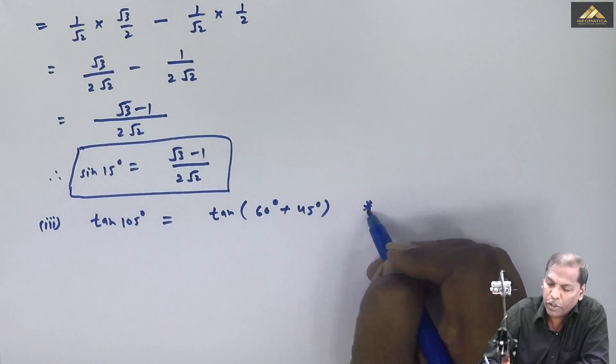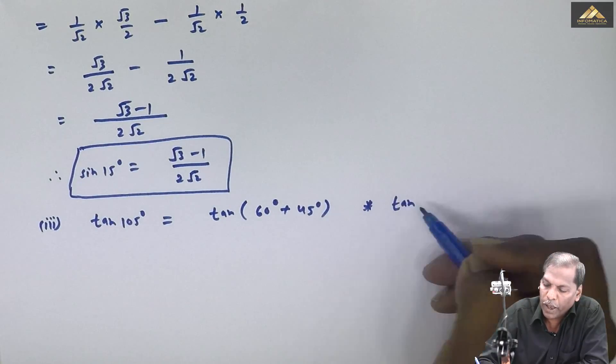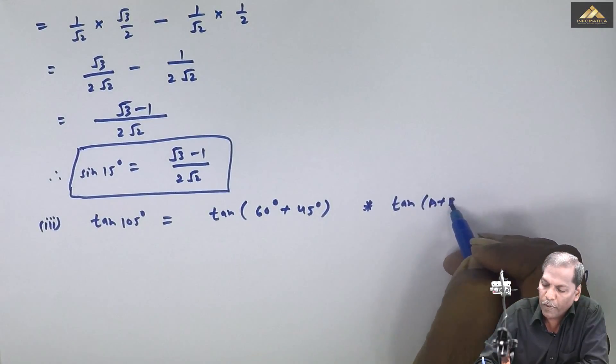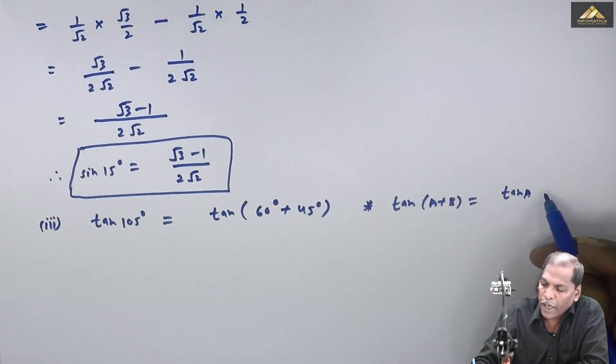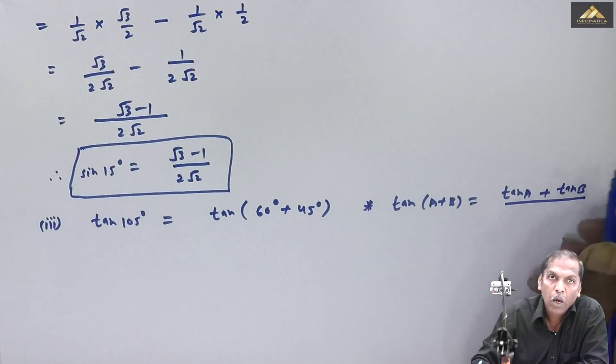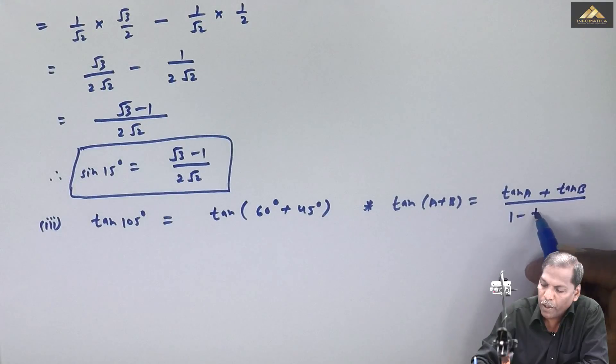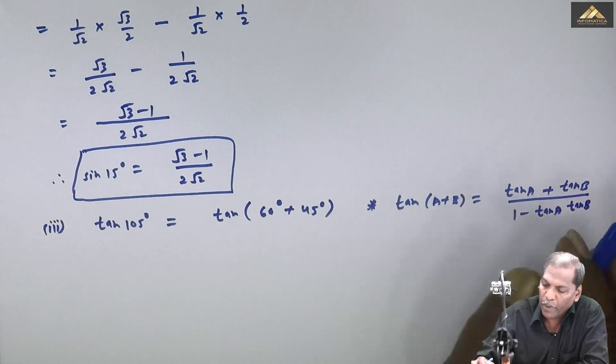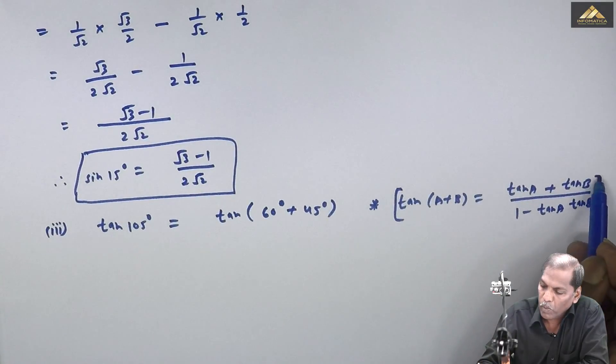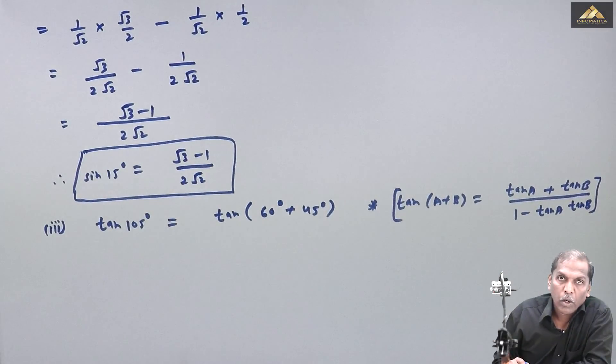Now I'll state the formula here. Tan of (a plus b) is equal to tan a plus tan b upon 1 minus tan a tan b. So we will use this formula in our problem.